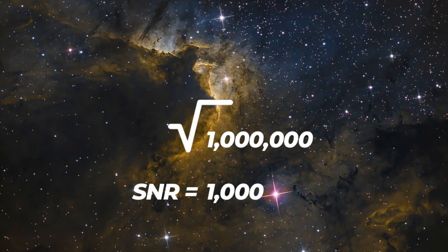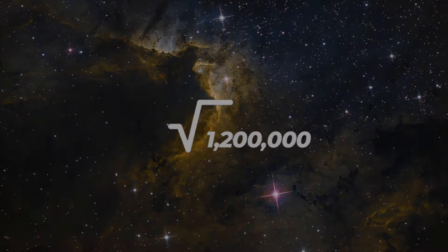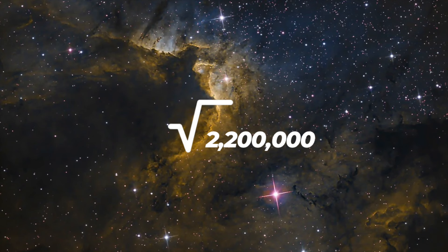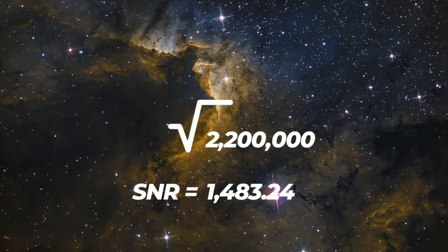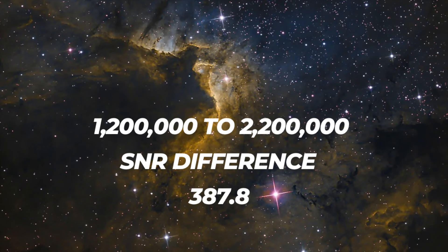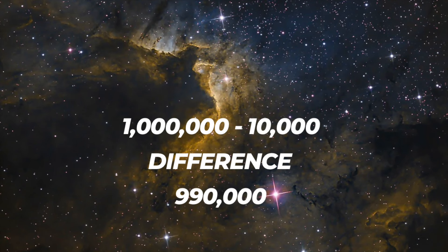That's a big jump, but when we start getting signal this high, we start to see the benefits diminish — the signal-to-noise ratio leveling off on the graph. If we increase integration to bring our signal to 1.2 million photons, the signal-to-noise ratio is 1,095.44. If we bump integration again to collect 2.2 million photons, the signal-to-noise ratio is 1,483.24. Going from 10,000 to 1 million was a difference of 900 in signal-to-noise ratio, but going from 1.2 million to 2.2 million was only a difference of 387.8 — even though that was a larger jump in signal. This is a perfect visualization of diminishing returns.